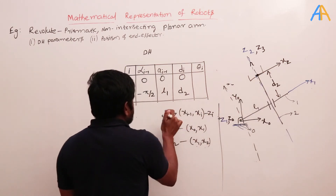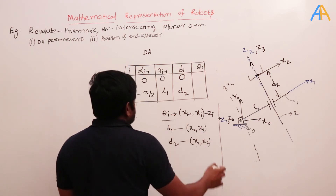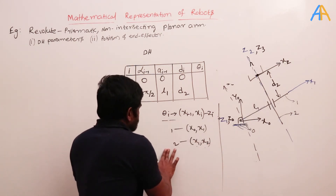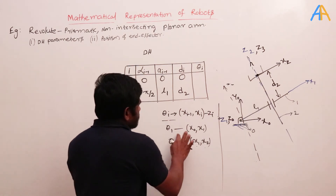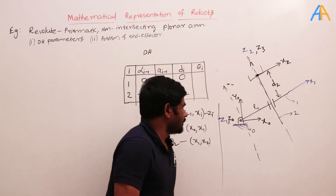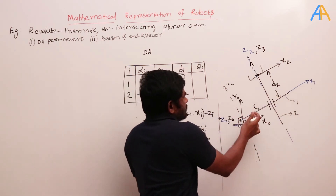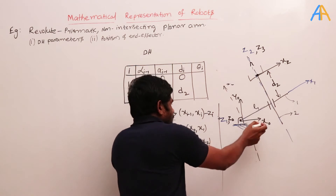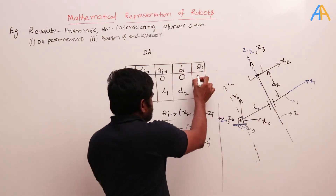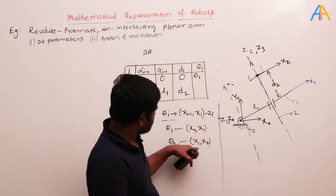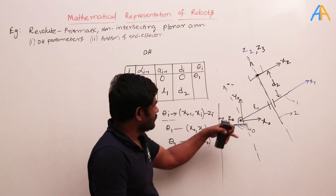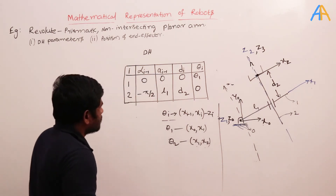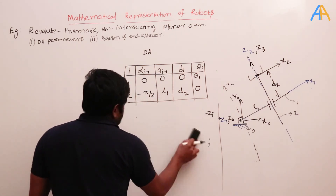Theta(i) is the angle between x(i-1) and x(i) about z(i). Theta-1 is the angle between x-naught and x1. Since it is a revolute joint, this direction changes with position, so theta-1 is the revolute variable. Theta-2 is the angle between x1 and x2, which is always zero because they are parallel — as expected for a prismatic joint.